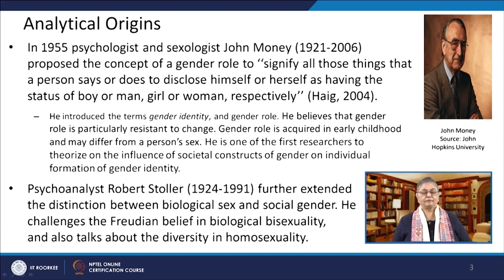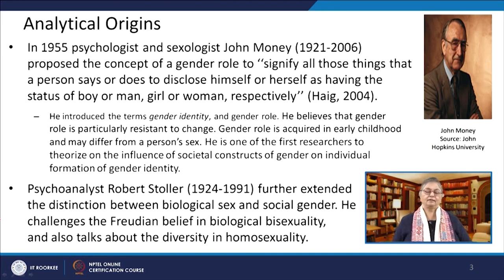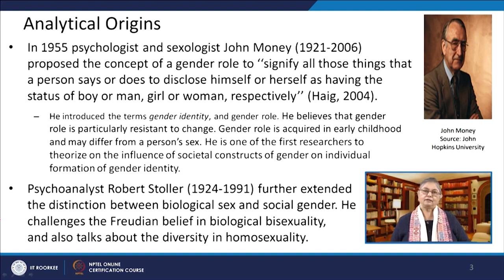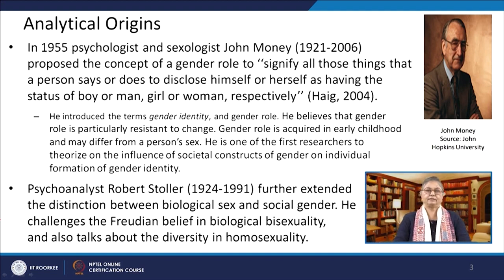As an analytic and critical term with reference to sex-related categories, the term gender was introduced into contemporary critical thought by way of sexological sciences. It was in 1955 that John Money, a famous psychologist and sexologist, proposed the concept of a gender role to signify all those things that a person says or does to disclose himself or herself as having the status of boy or man, girl or woman respectively. He also introduced the terms gender identity and gender role, believing that gender role is particularly resistant to change.